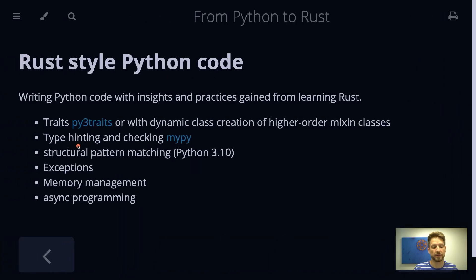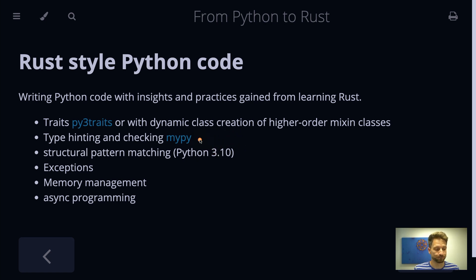Here we have the big difference between Python, a dynamically typed language, and Rust, which is statically typed. In Python, you don't have to define the types of arguments to functions or the return type of a function. In Rust, you have to. That is a habit you can actually pick up and it will be very advantageous for your code. There is the MyPy project that will do the checking for you. The whole type hinting and type checking becomes way more comfortable when using Python 3.9 and higher, because there you do not have to import from the typing module when you want to define a list or a dict type.